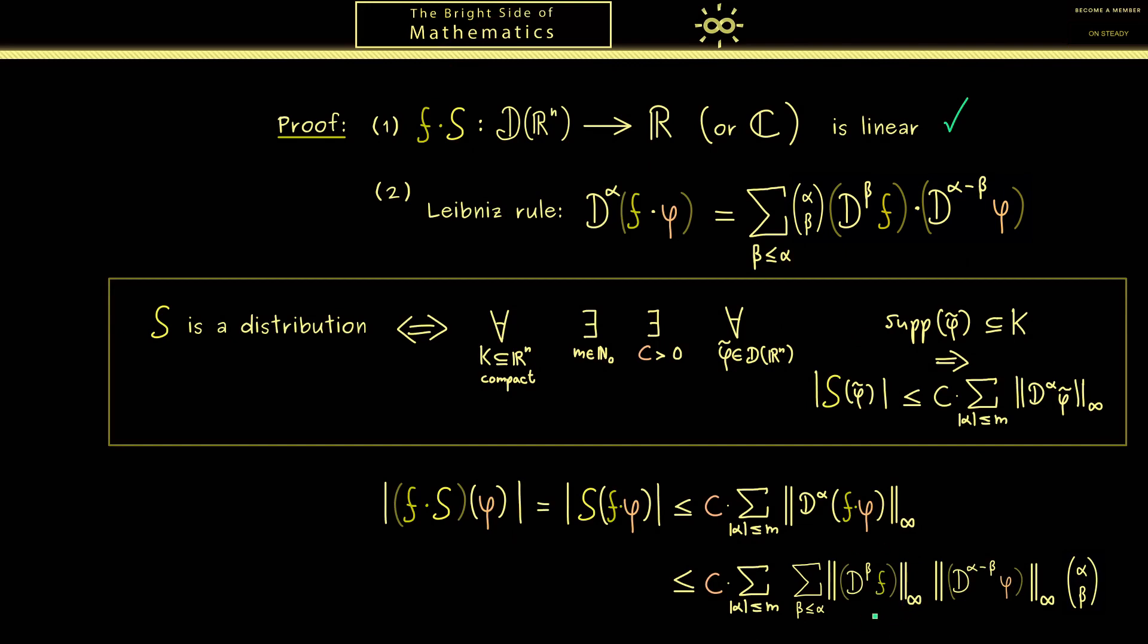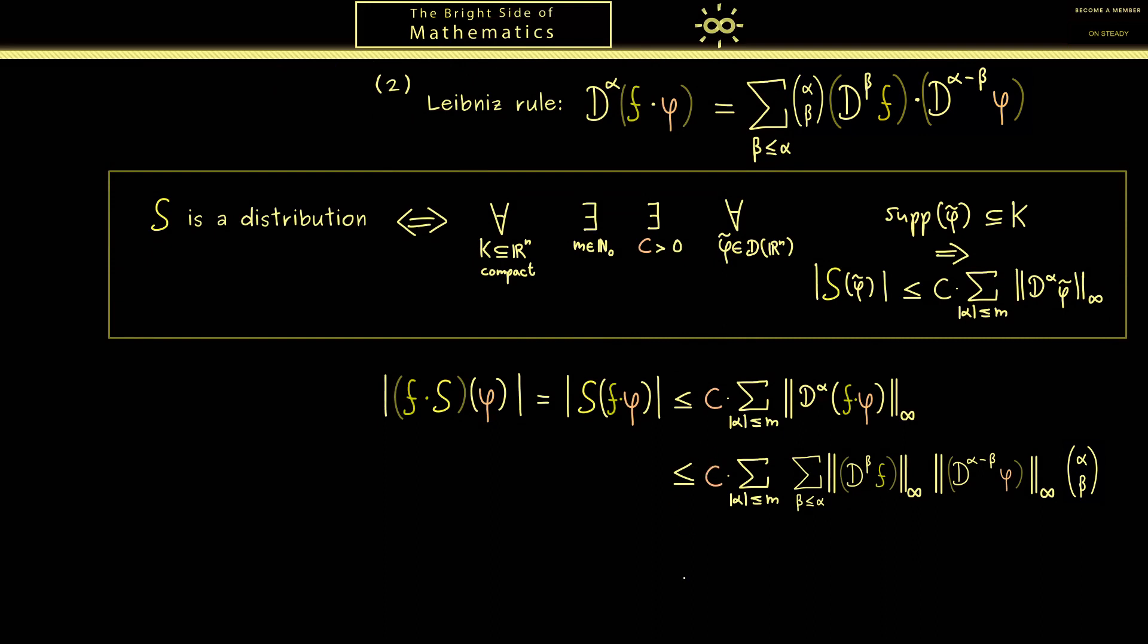This here is always a finite number and it does not depend on φ. Hence all these things here can be put into a new constant c. Obviously the explicit value of the constant is not important at all. Therefore let's simply introduce a new constant c tilde. And then the remaining part can be written as the sum of the partial derivatives of our test function φ. OK, then with this calculation here you should see we can read this whole expression here now with the new linear map f times S. And therefore the equivalence here shows that f times S is indeed a distribution.